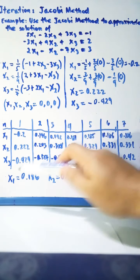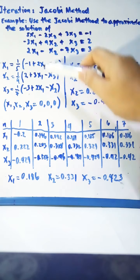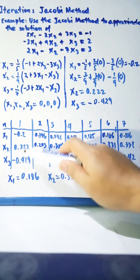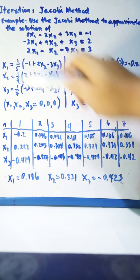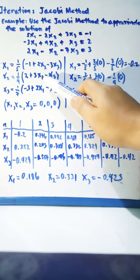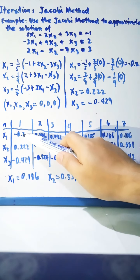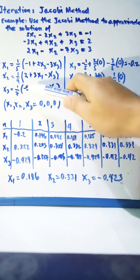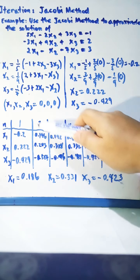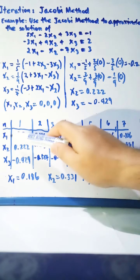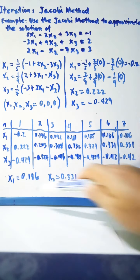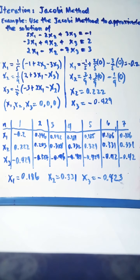For iteration 2, use the values from iteration 1: substitute x₂ and x₃ from the previous iteration into the x₁ equation, and use x₁ and x₃ from the previous iteration for x₂, and so on. You stop your iteration when the values of x₁, x₂, and x₃ are identical between consecutive iterations. Since they are now identical, we stop, and those are the final values.